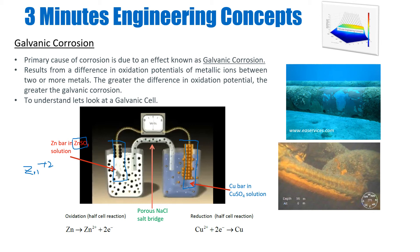I connect these two metallic bars with a conductor and a voltmeter, so when electrons start to flow from the more active to the less active material, I can measure the potential difference. In addition, there is a salt bridge — sodium chloride in this case — which provides ions to the solutions when there is an imbalance, keeping the whole system in equilibrium. As the reaction starts, zinc loses electrons, becomes zinc²⁺ ions, and dissolves into solution, while those electrons travel along the wire and are taken up by copper, which then receives copper ions from its solution.